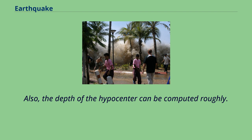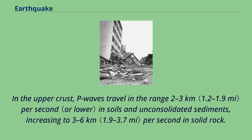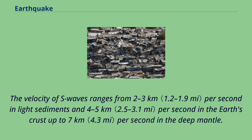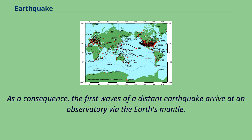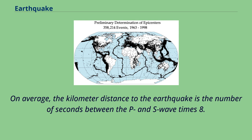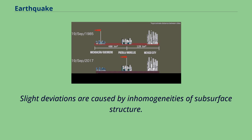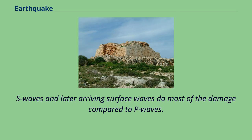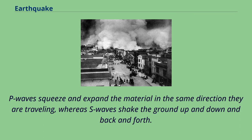The depth of the hypocenter can also be computed roughly. In the upper crust, P waves travel in the range 2 to 3 km per second in soils and unconsolidated sediments, increasing to 3 to 6 km per second in solid rock. In the lower crust they travel at about 6 to 7 km per second, and the velocity increases within the deep mantle to about 13 km per second. The velocity of S waves ranges from 2 to 3 km per second in light sediments and 4 to 5 km per second in the Earth's crust, up to 7 km per second in the deep mantle. On average, the kilometer distance to the earthquake is the number of seconds between the P and S wave times 8. By such analysis of seismograms, the Earth's core was located in 1913 by Benno Gutenberg. S waves and later arriving surface waves do most of the damage compared to P waves.